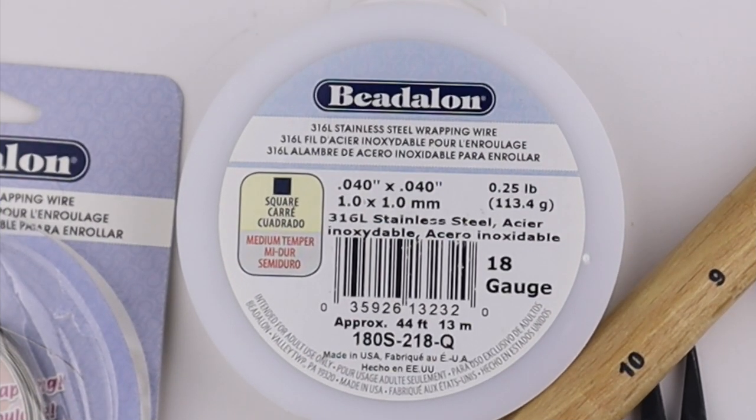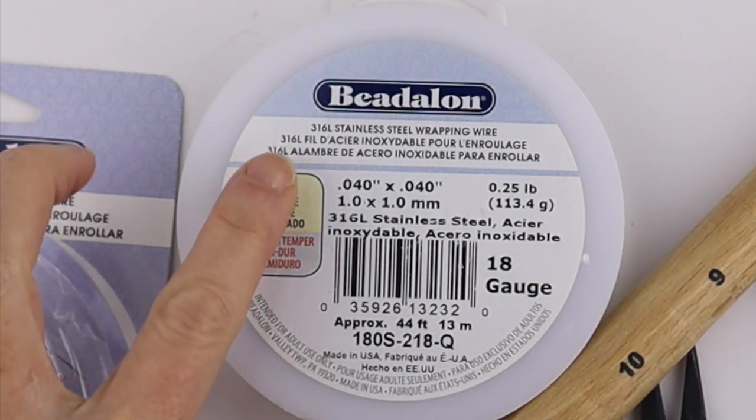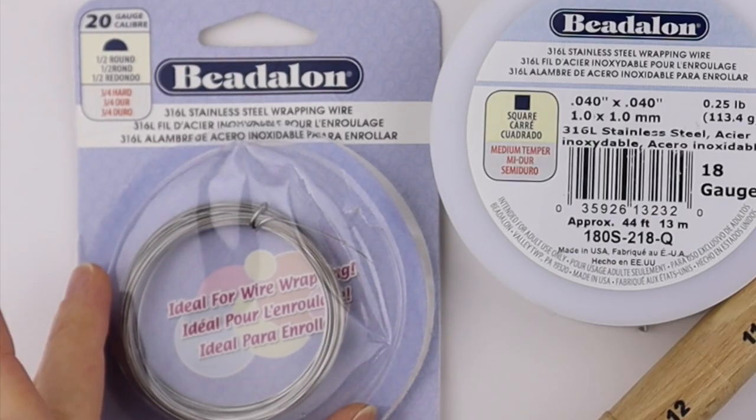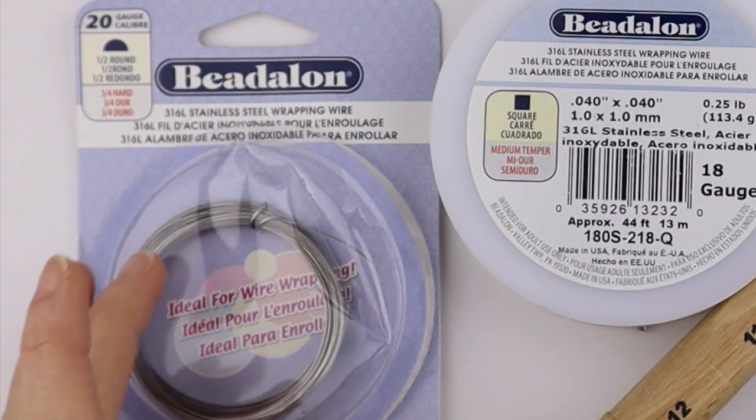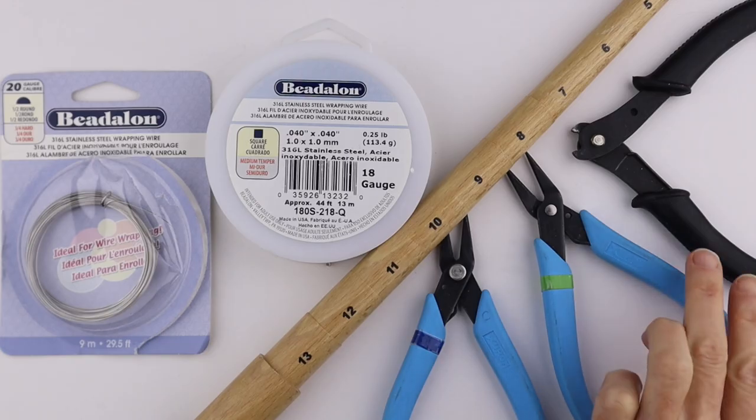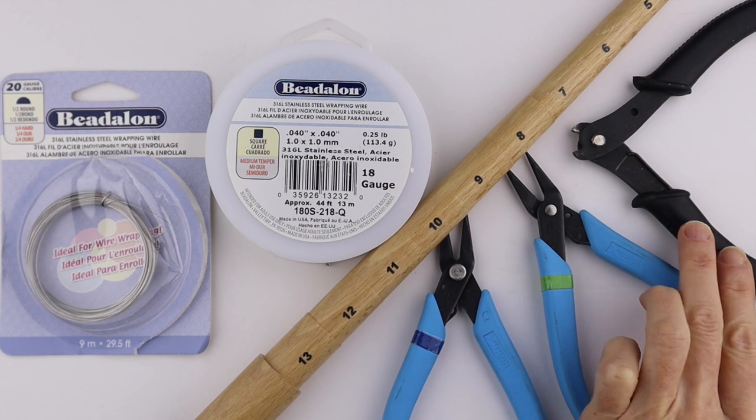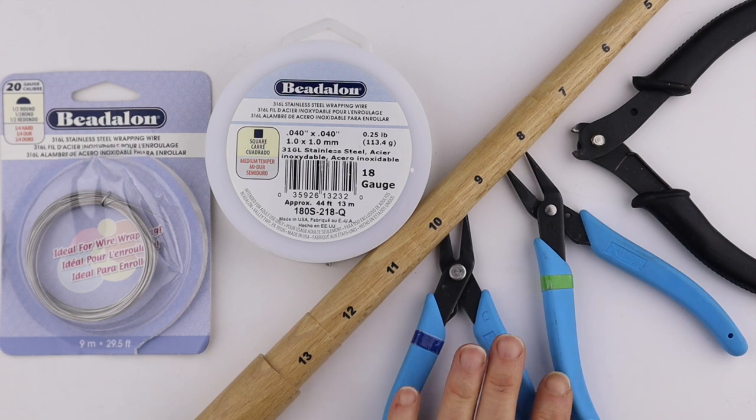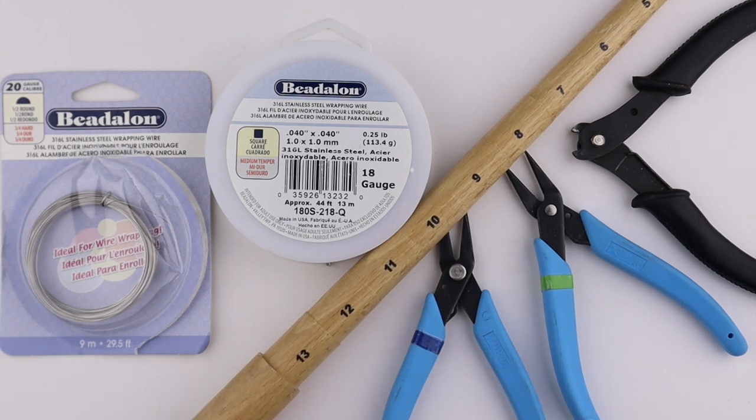What you're going to need for this project is square wire. I'm using the 18 gauge stainless steel wrapping wire from Beadalon and the half round 20 gauge wire from Beadalon, also stainless steel. Because of the steel wire I'm going to use my memory wire cutters. You can also make this with copper wire. I have my round pliers, flat pliers and my ring mandrel.